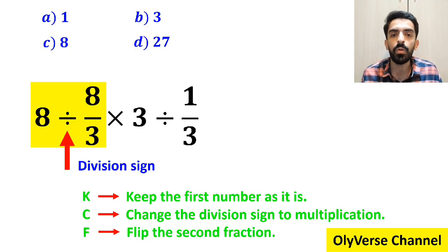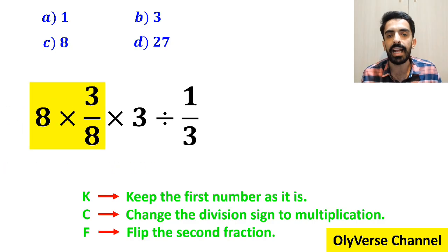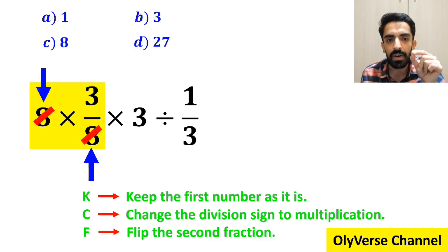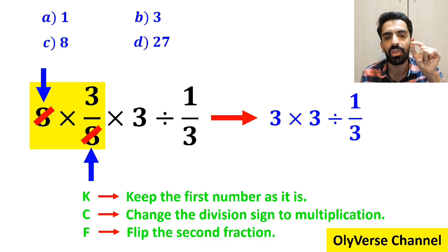So we remove the highlighted part and replace it with 8 multiplied by 3 over 8. Now the two 8s can be simplified, and we can write this expression as 3 times 3 divided by 1 over 3.